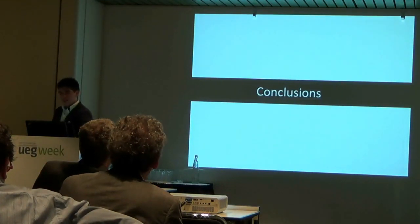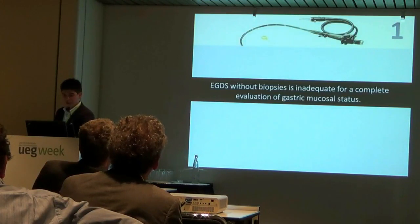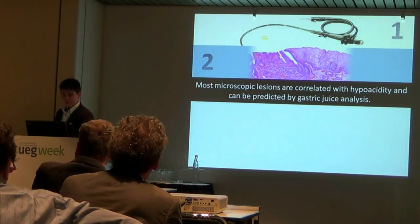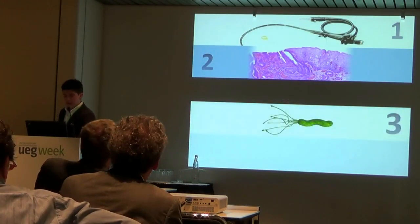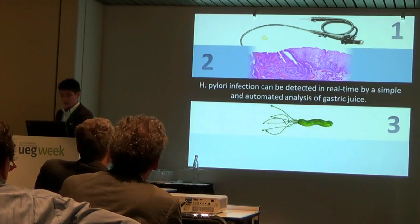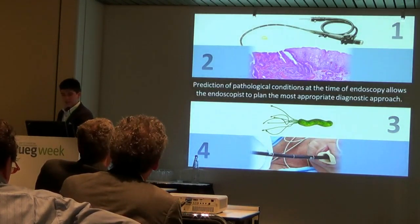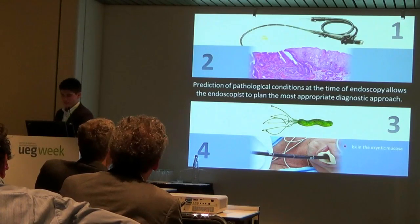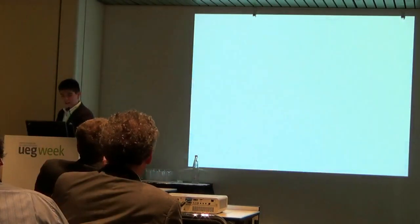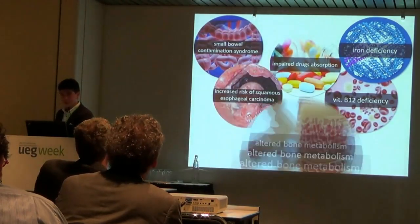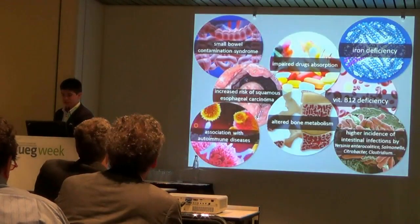Conclusions. EGDS without biopsies is inadequate for a complete evaluation of the gastric mucosal status. Gastric mucosal lesions are correlated with hypoacidity and can be predicted by gastric juice analysis. H. pylori infection can be predicted in real time by a simple and automated analysis of gastric juice. The prediction of pathological conditions at the time of endoscopy allows endoscopists to plan the most appropriate operative diagnostic approach for each patient, such as taking biopsies from the oxyntic mucosa, alerting the pathologist, ordering specific blood tests or additional stains. Finally, it is worth noting that hypochloridria is not only correlated with gastric malignancy but also with many other conditions of considerable clinical and pathological importance that are not easily detectable.